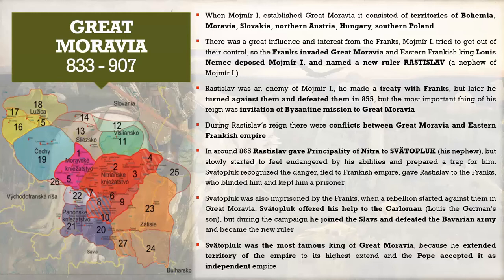Svätopluk is perhaps the most famous king of Great Moravia because he extended the territory of the empire to its greatest extent, and the Pope even accepted it as an independent empire. You can see the numbered regions on the map showing the process of expansion — from the Moravian Principality as number one, then Nitra as number two, all the way to number 27, which extends beyond the southern border of modern-day Hungary.